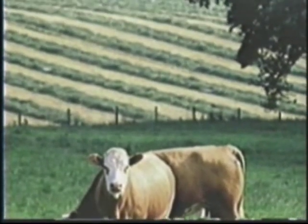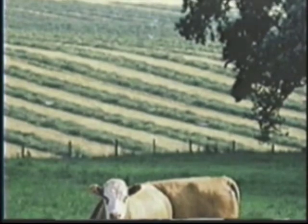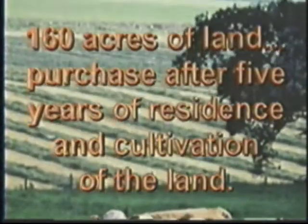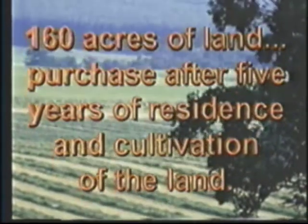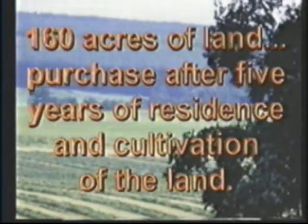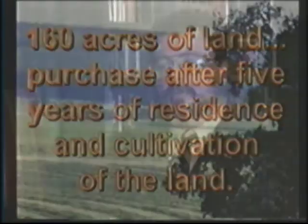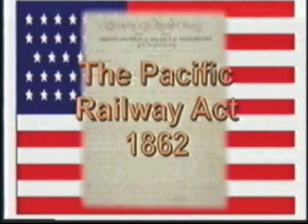It permitted any citizen to receive 160 acres of public land and then to purchase it for a nominal price after living on it for five years. The political moment was right to make possible the obtaining of homesteads by white families that would settle them and establish yeoman farmer societies, which would be very hostile towards the introduction and extension of slavery.